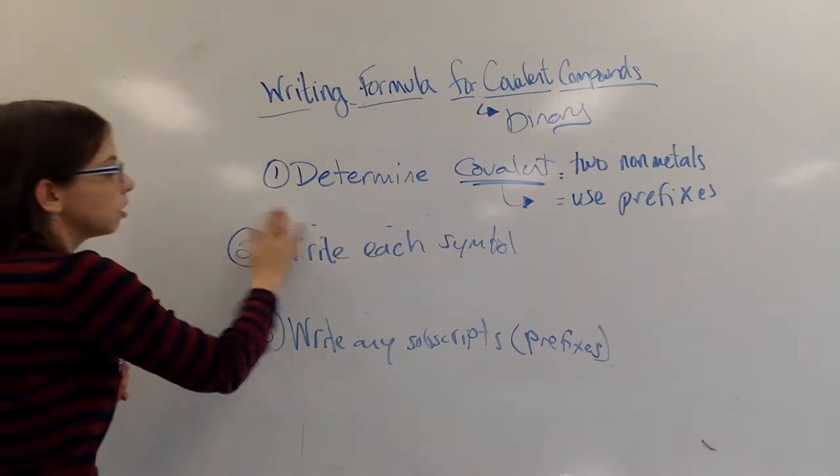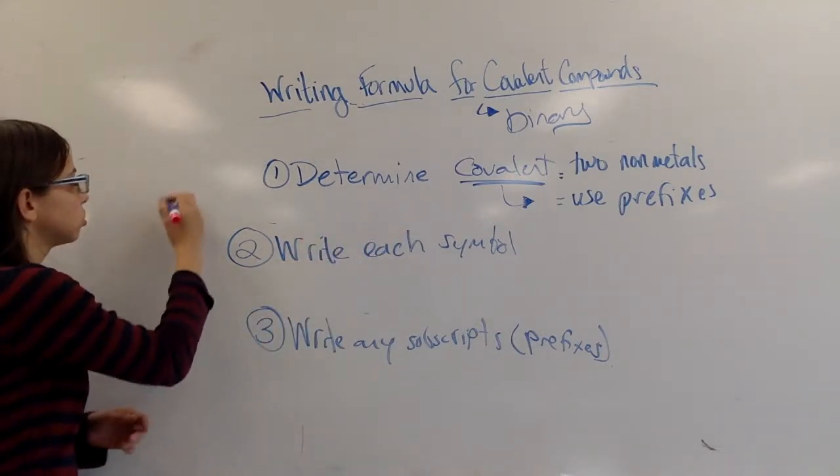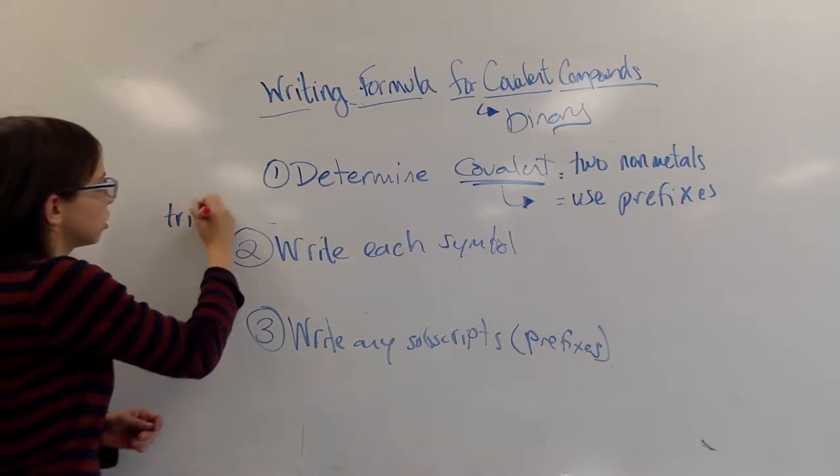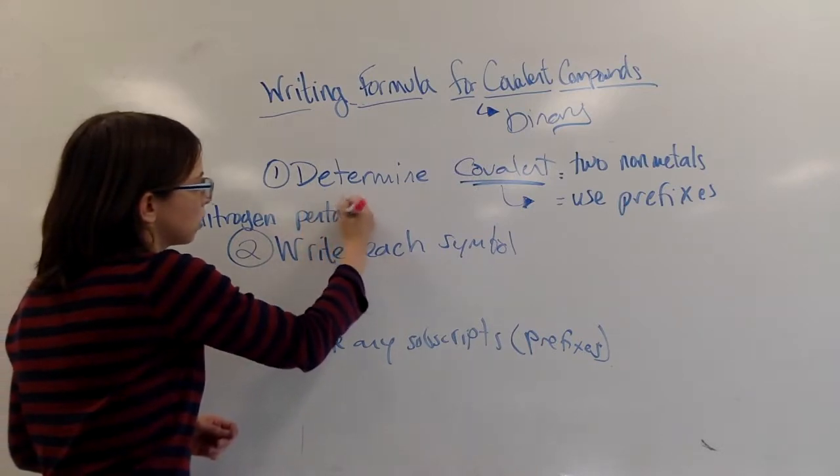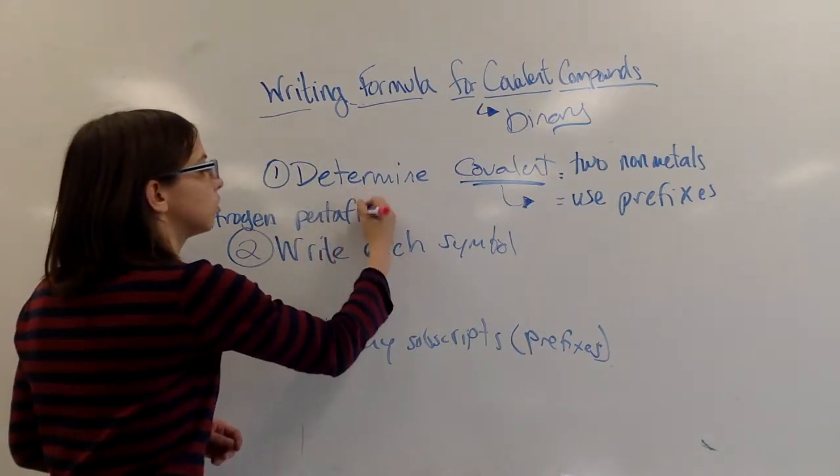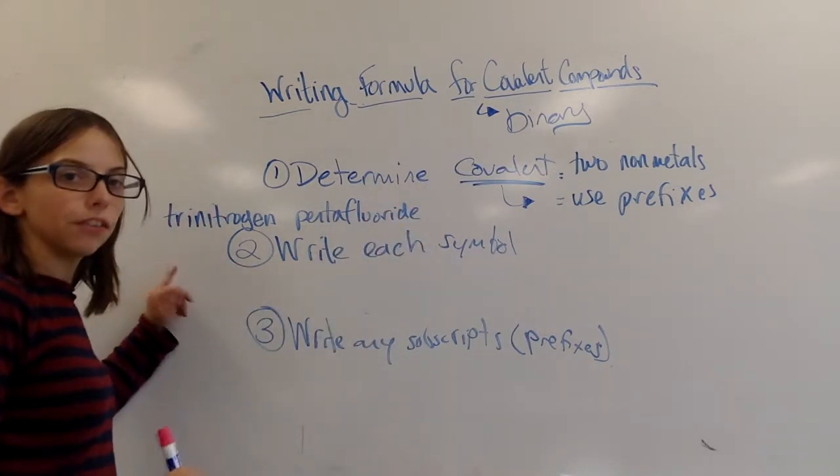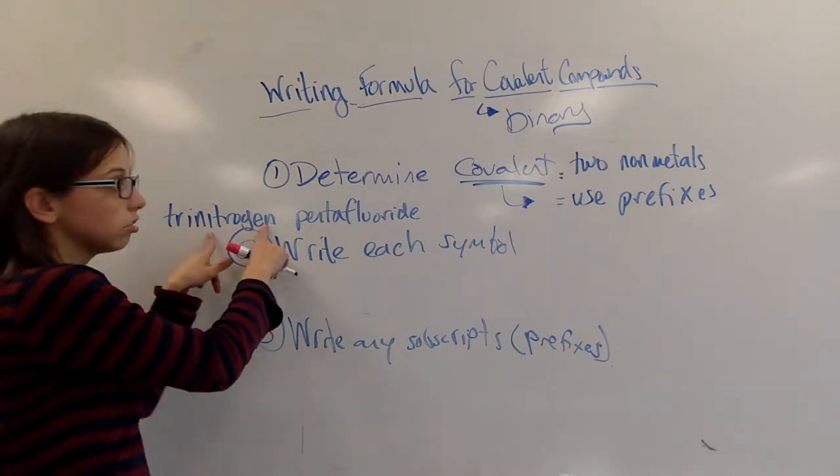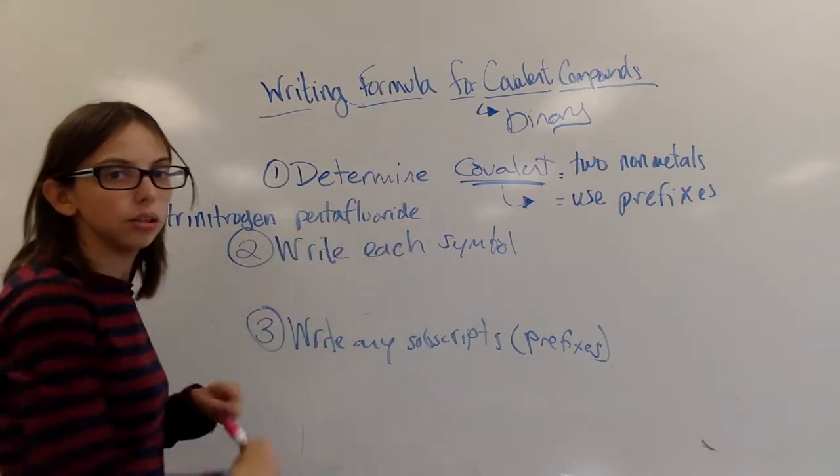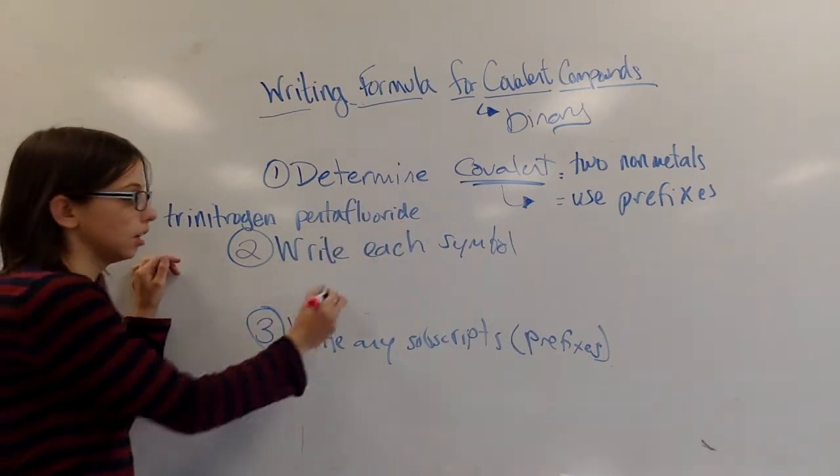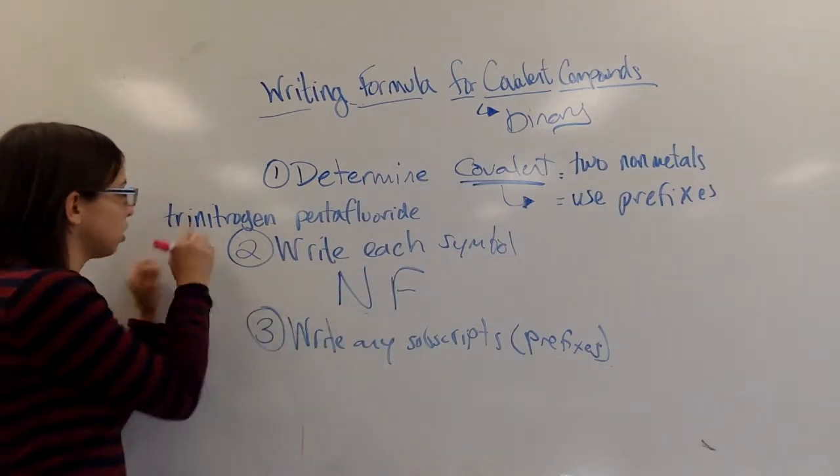All right. Another example, one that does have prefixes for each of them. Let's talk about trinitrogen pentafluoride. So again, I know it's covalent because I have nitrogen right there. Fluoride, fluorine, after I change the ending to it. So I'm going to write my symbols. Those are both on the right side. So I have N and F in that order because that's the order it's written.